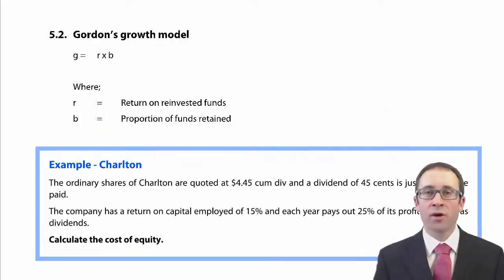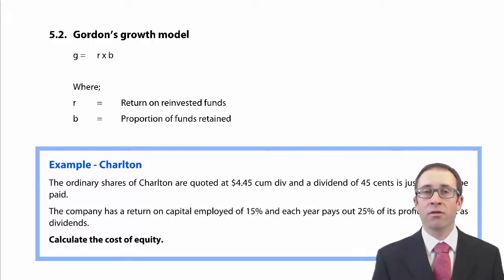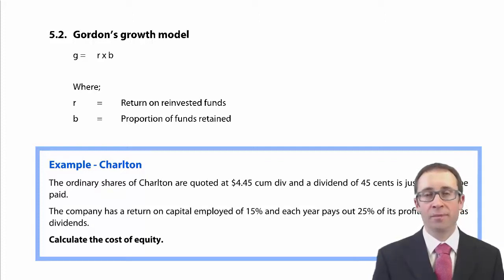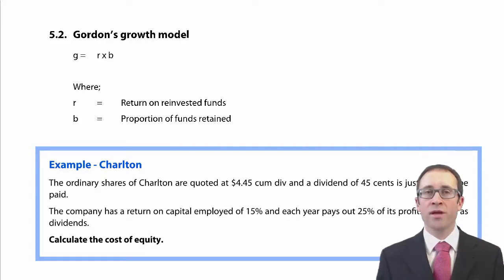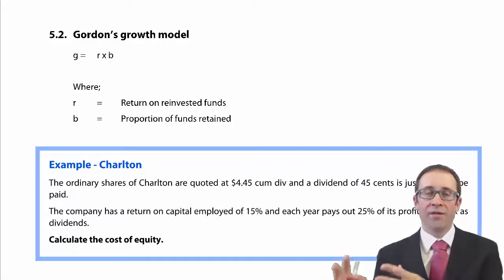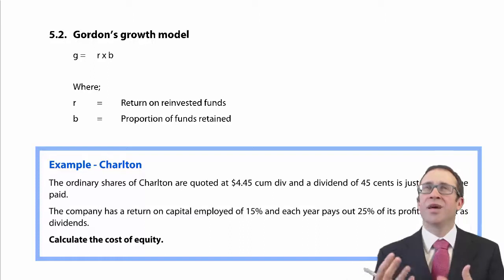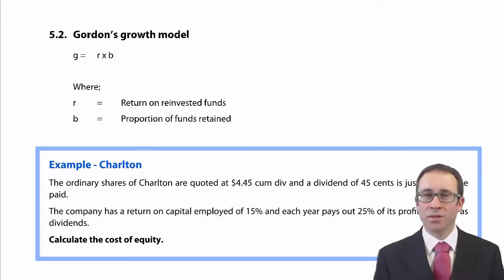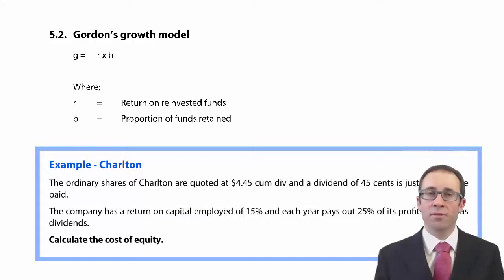We've looked at our historic growth rate method to calculate the growth that appears in the cost of equity formula, which will then substitute into our weighted average cost of capital calculation. The issue with the historic growth rate is that we assumed whatever growth had been in the past will be the growth into the future, which is not necessarily a realistic assumption. What's happened in the past doesn't necessarily dictate what's going to happen in the future.